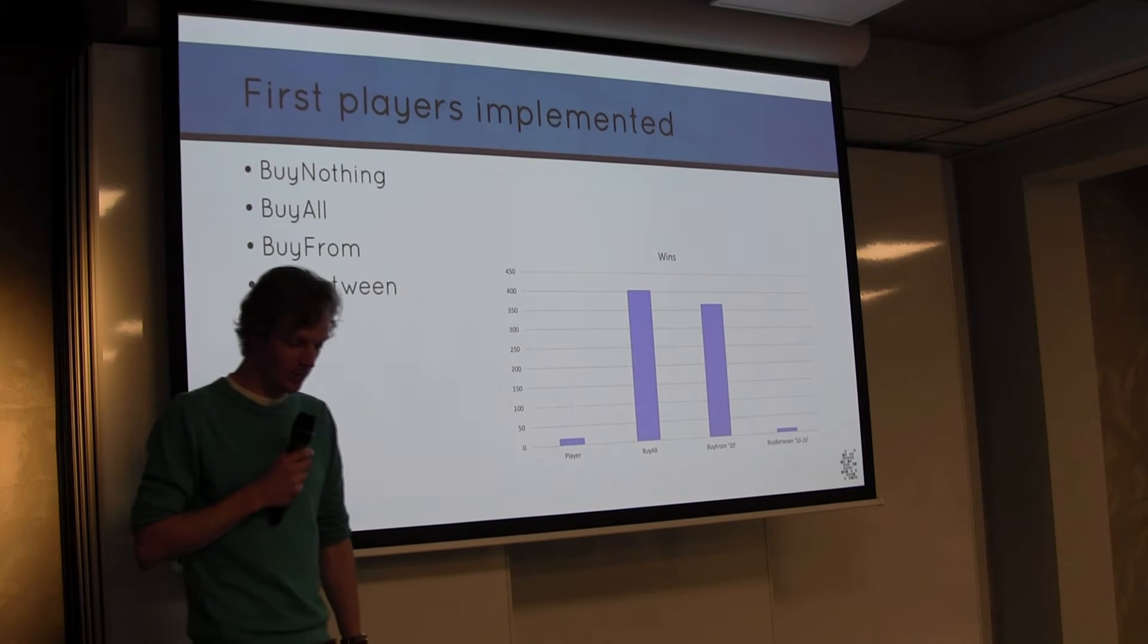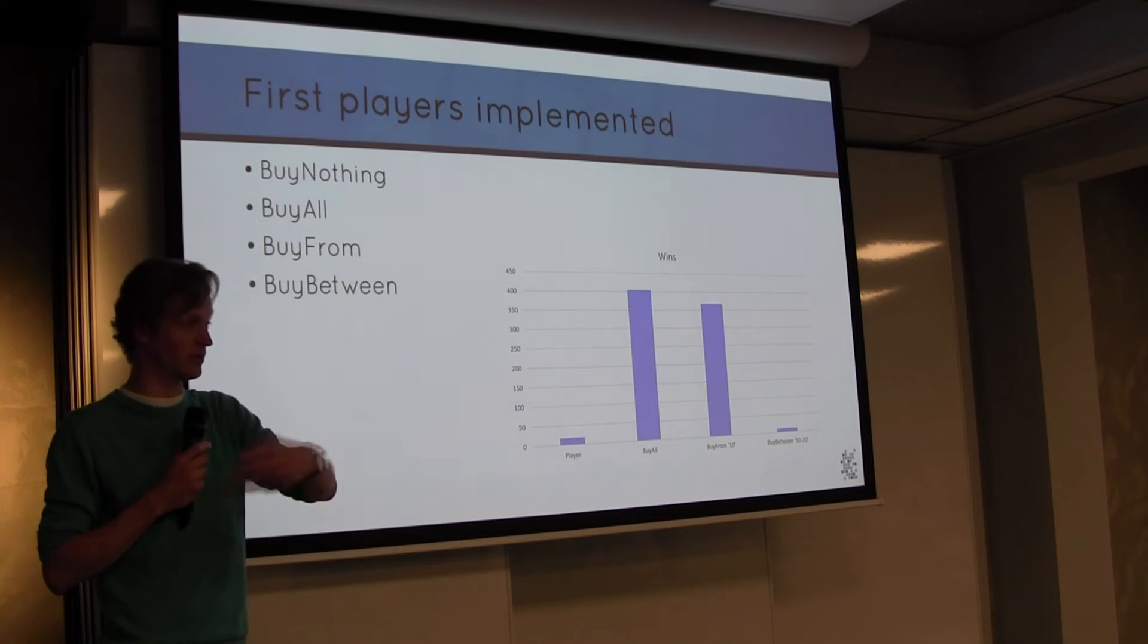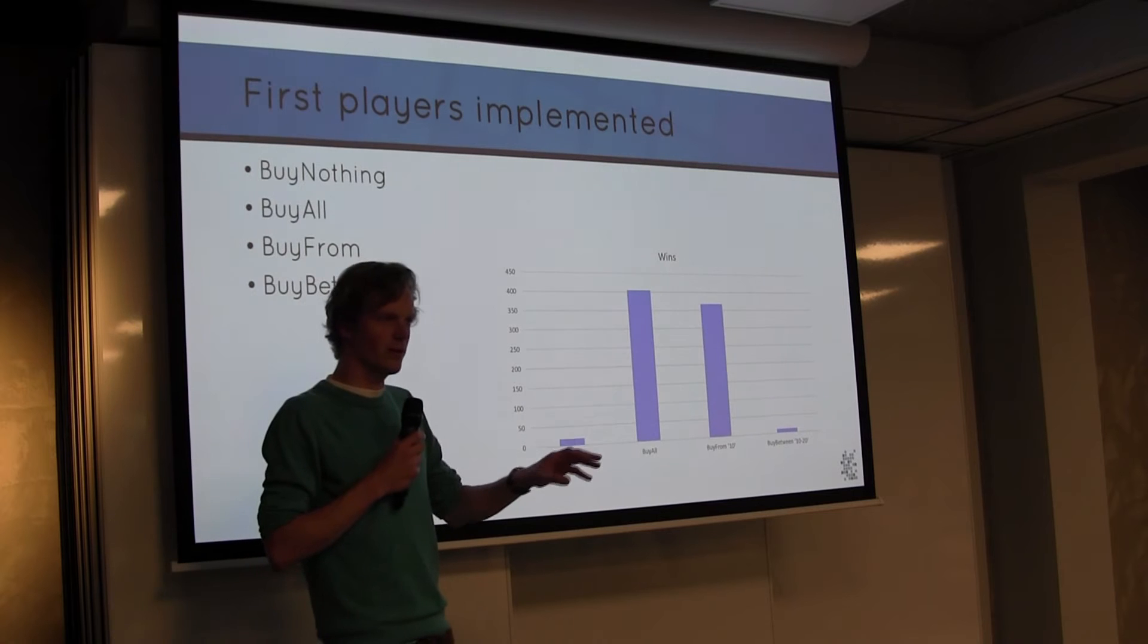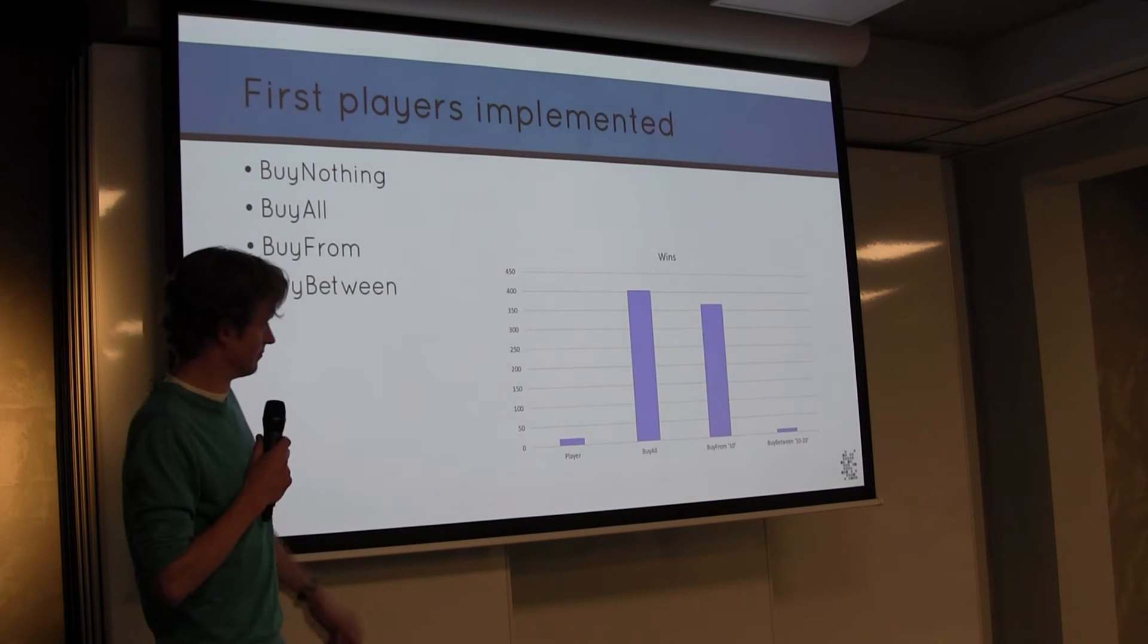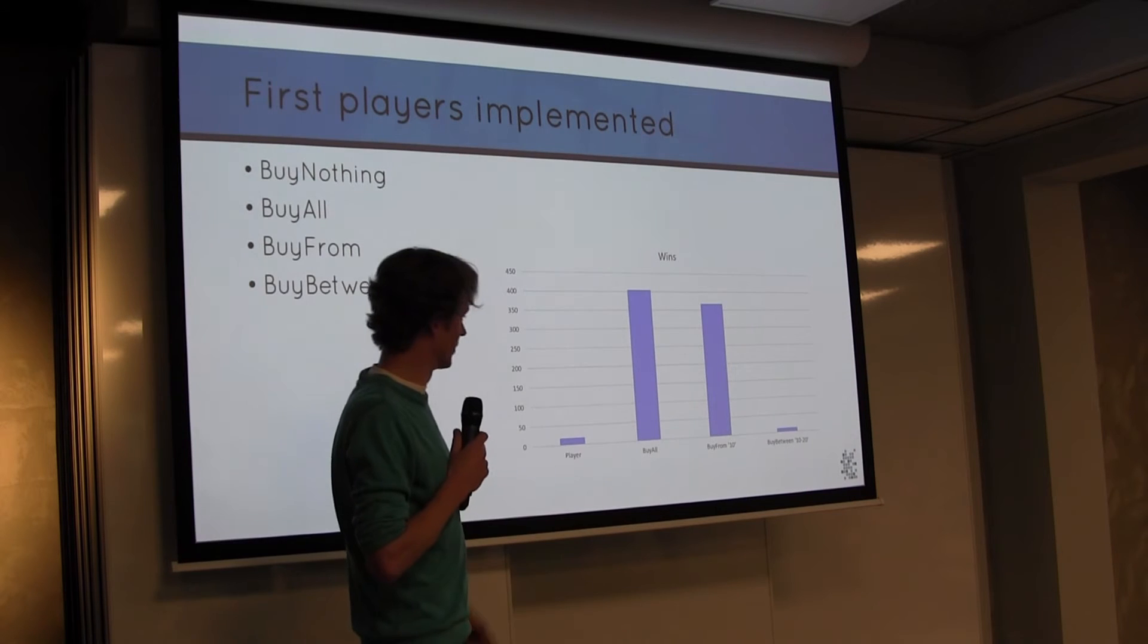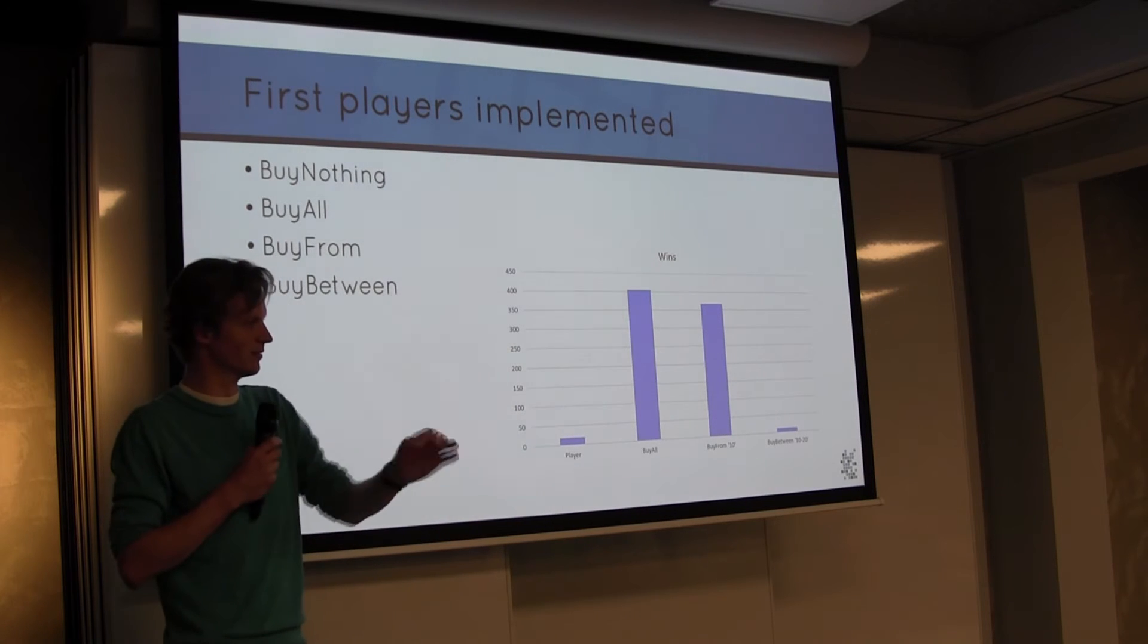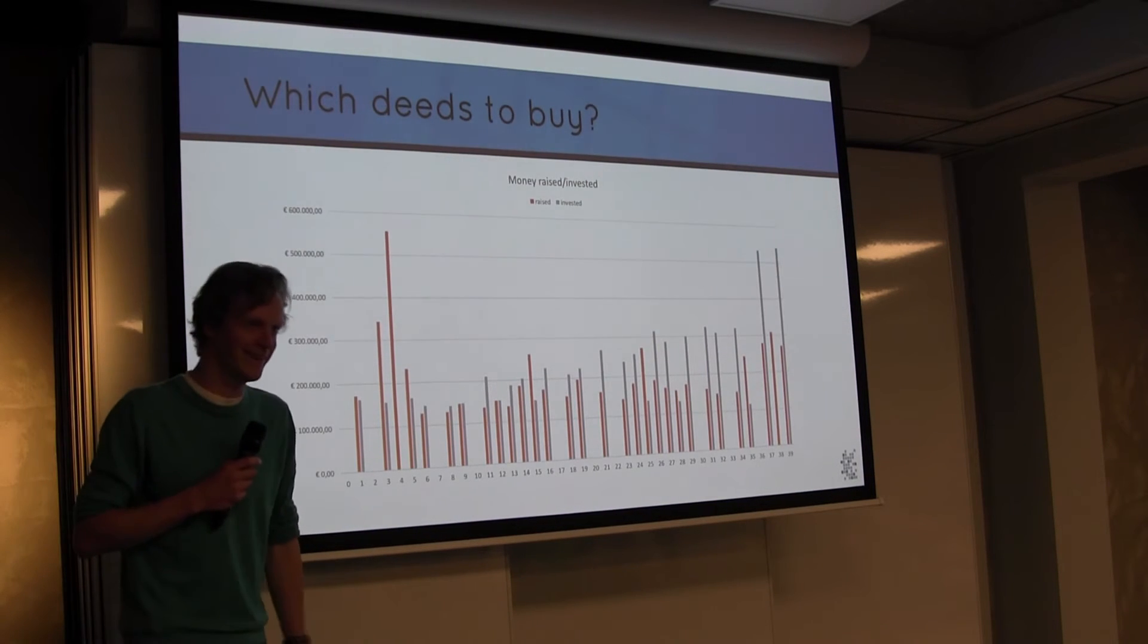So then I implemented some players. The buy nothing player basically does nothing, just walks across the board. Buy all, which just tries to buy everything, put hotels everywhere. Buy from and buy between. Because I figured out from the probability that maybe buy from or buy between I could optimize a bit already on the positions to buy. I did a thousand games, and this is the result. So buying nothing doesn't really get you anywhere. Buying all and buying from works quite well, and the buy between is also not that interesting. Buy from the 10 is the 10th, it's like the first tile after the jail, the 10th position on the 10th index. 11, but yeah, good scientist, so that's 10.